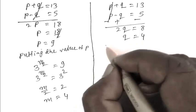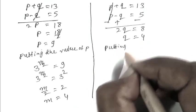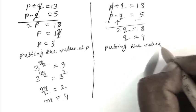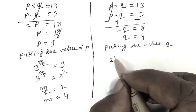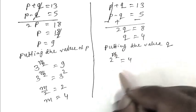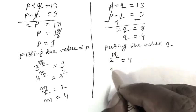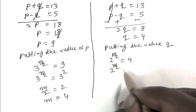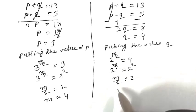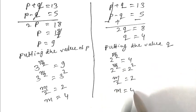Here we are putting the value of Q, that is 2 to the power M by 2 equals 4, or 2 to the power M by 2 equals 2 squared. Or M by 2 equals 2, or M equals 4.